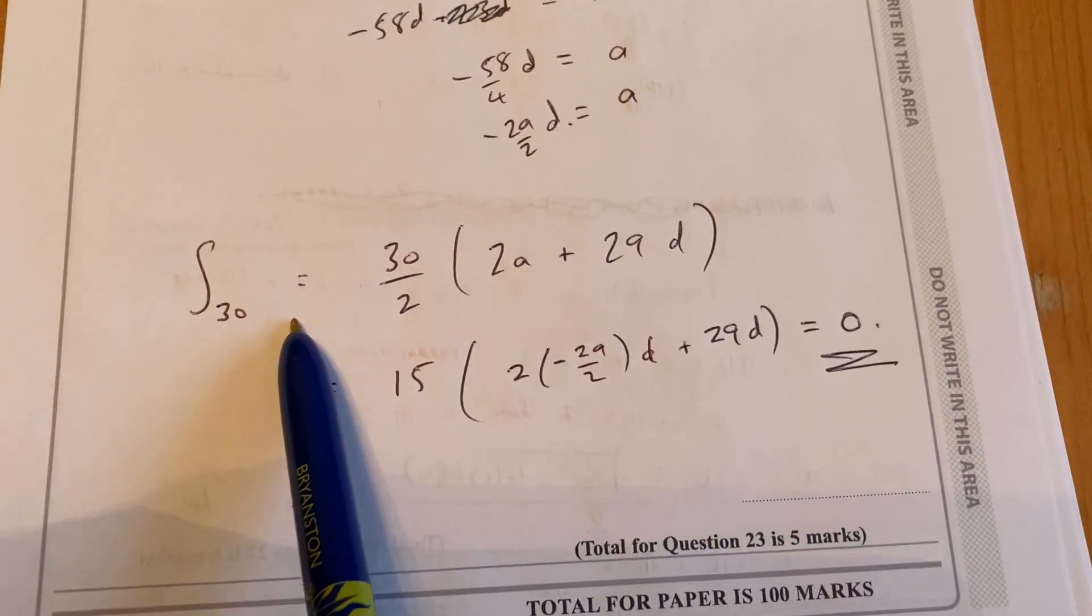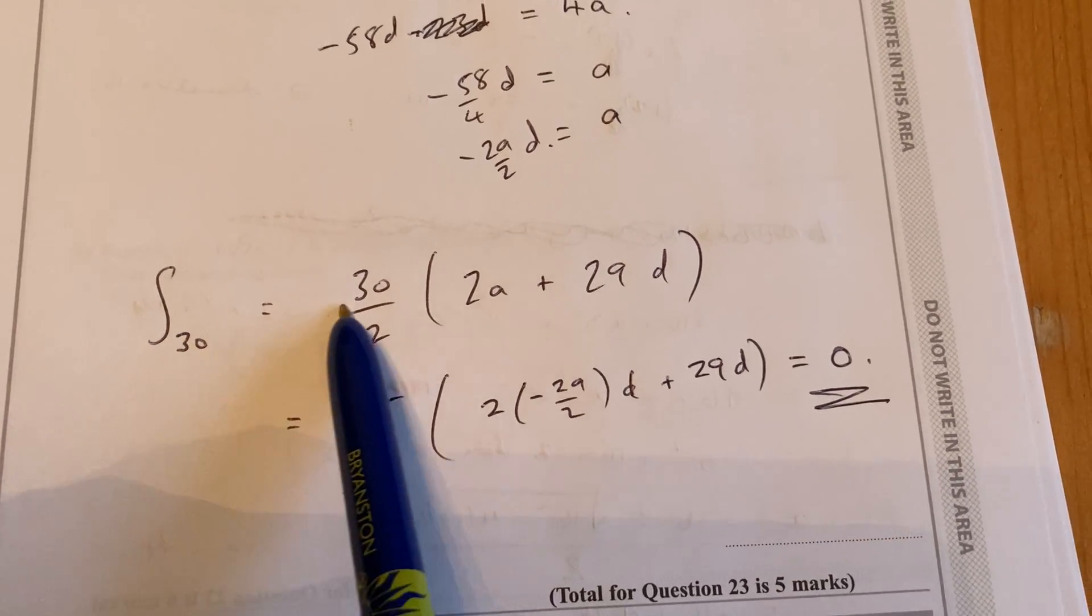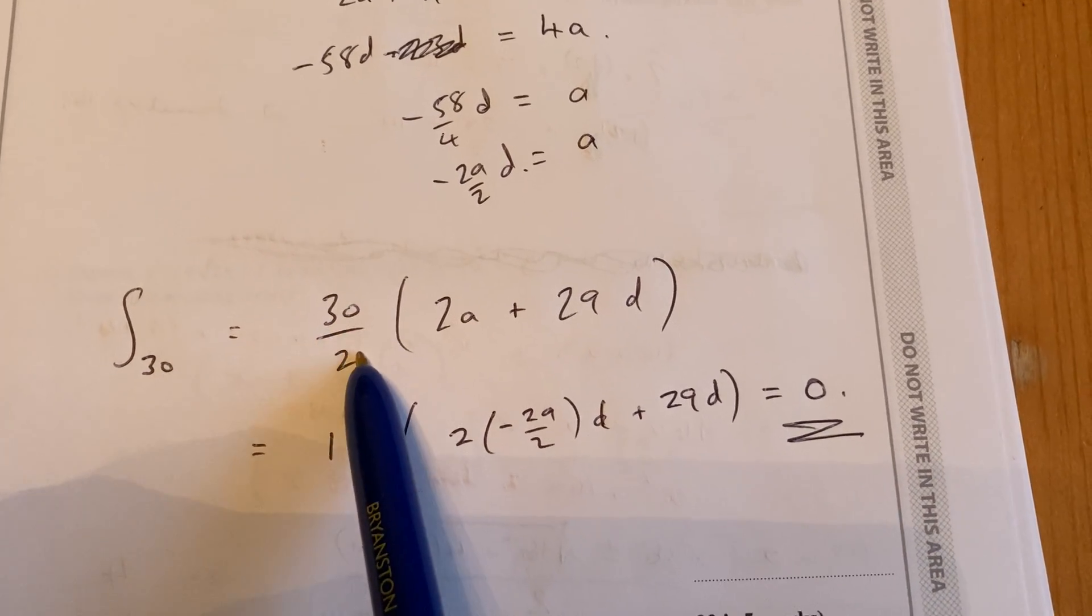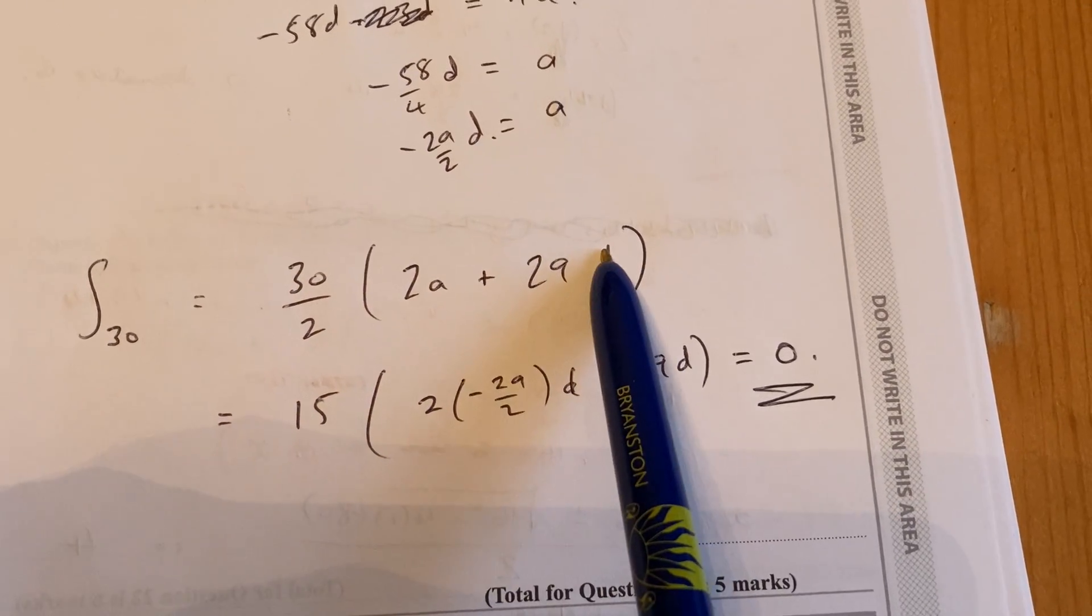So we're going to go back to the formula from the formula sheet. It's called S30 when you do it for 30 terms. And then 30 over 2, 2a plus 29d is coming from the formula on the formula booklet.